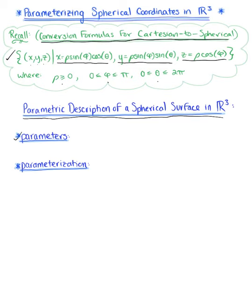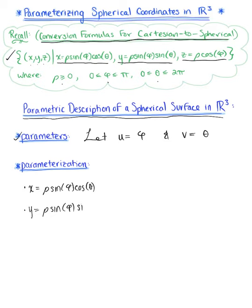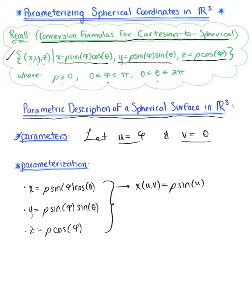We can now use these conversion formulas to find that two-parameter description of a spherical surface in three dimensions. We begin by redefining our two parameters: we're going to let u be angle phi, and we're going to let v be angle theta. We now find the parameterization for a spherical surface. We know that x is defined as rho sine of phi cosine of theta, so the parametric description of x in terms of the parameters u and v is defined as rho sine of u cosine of v.